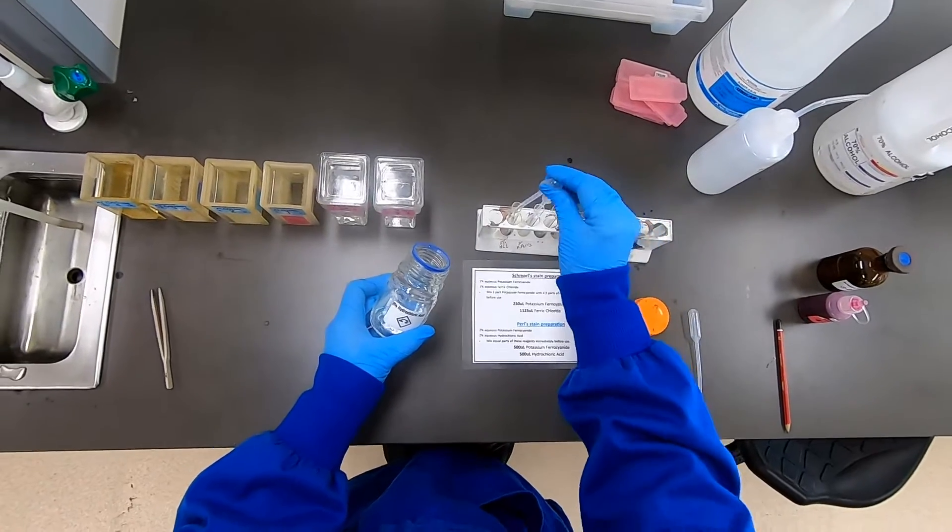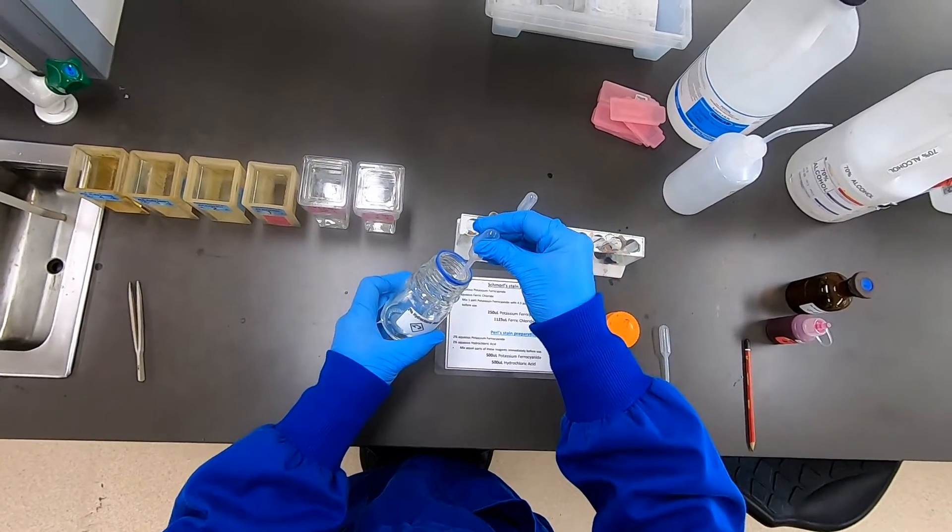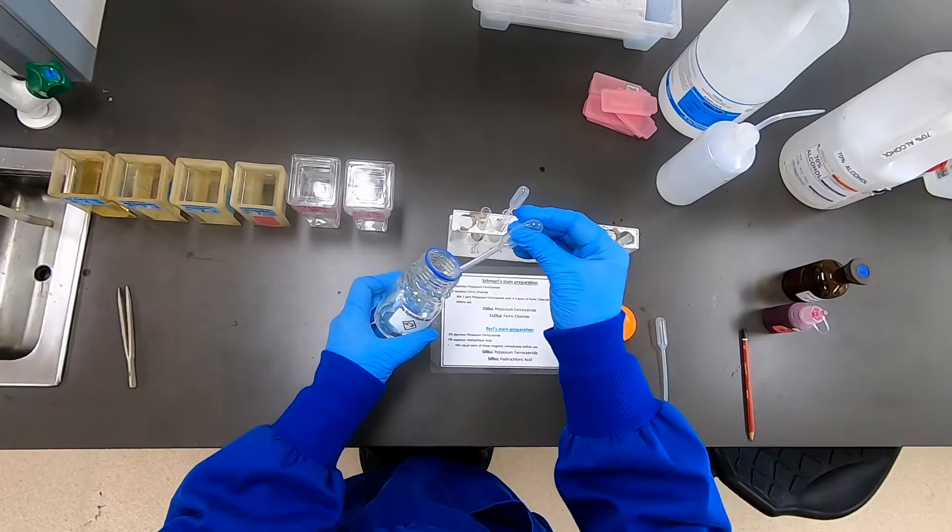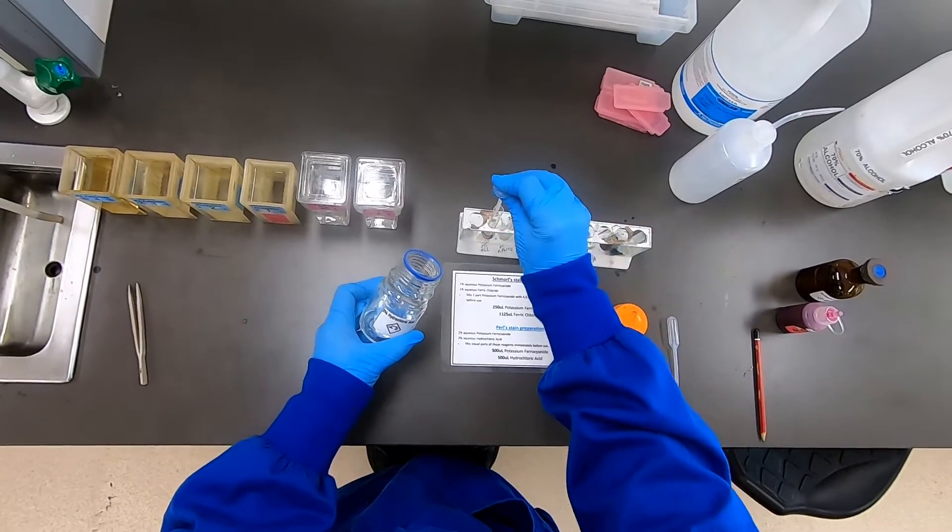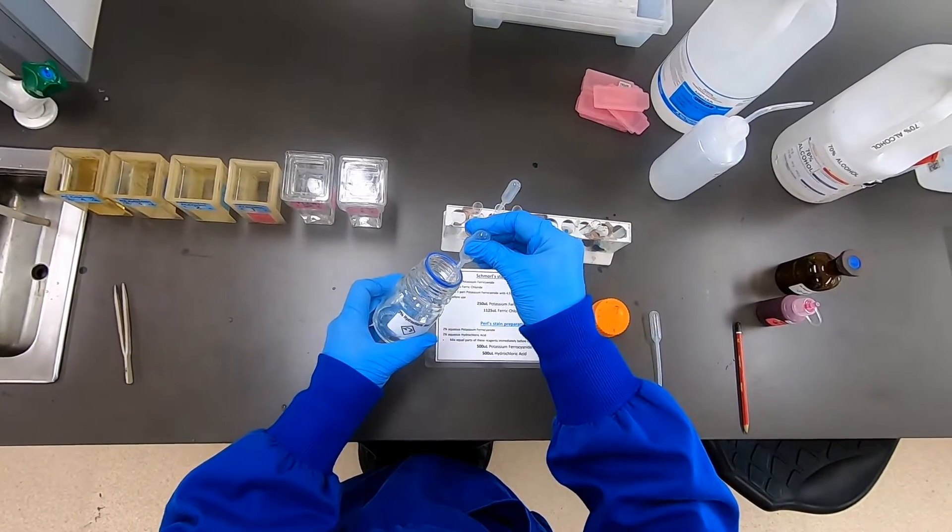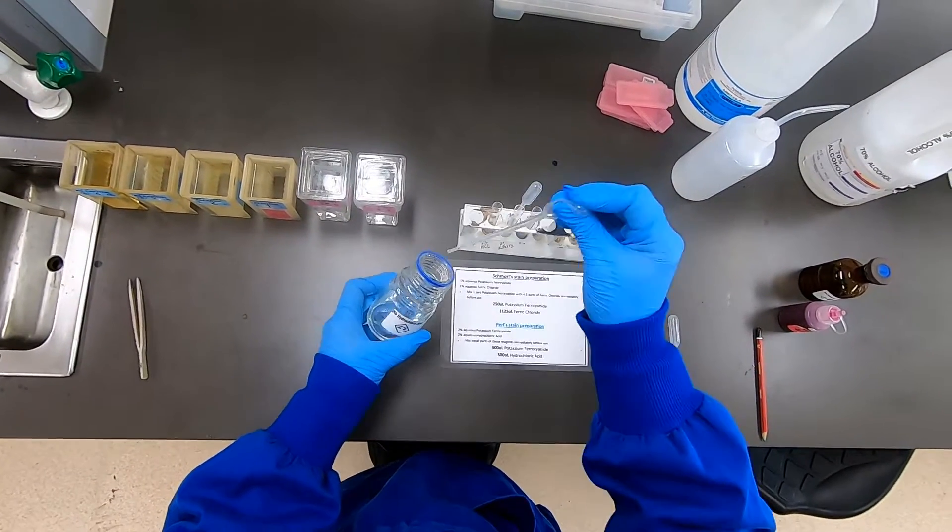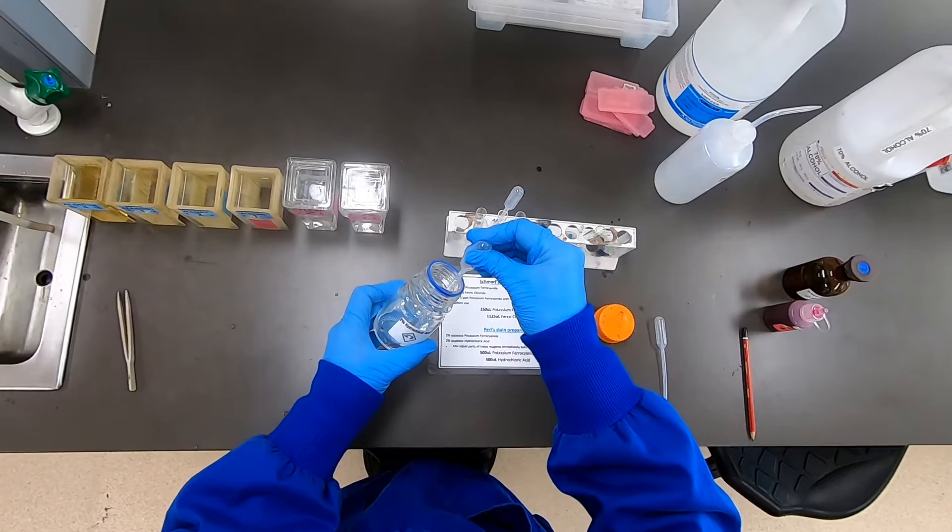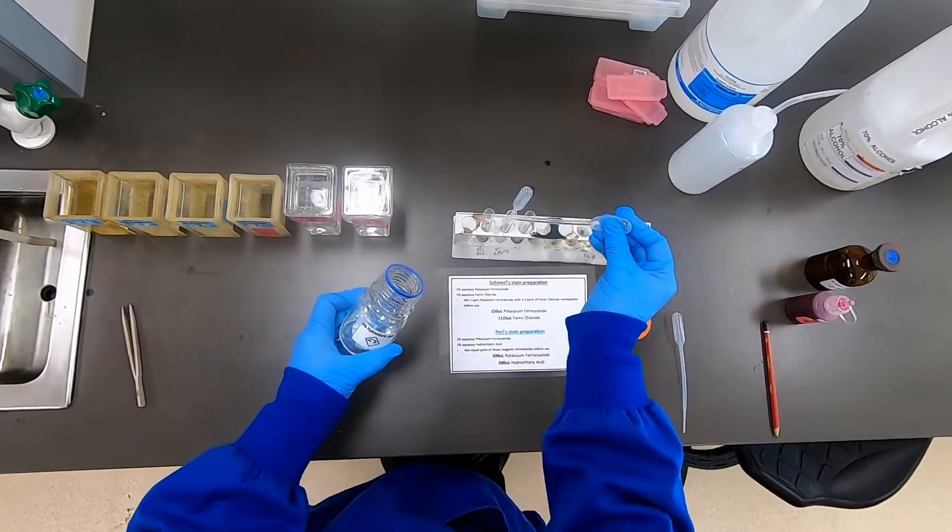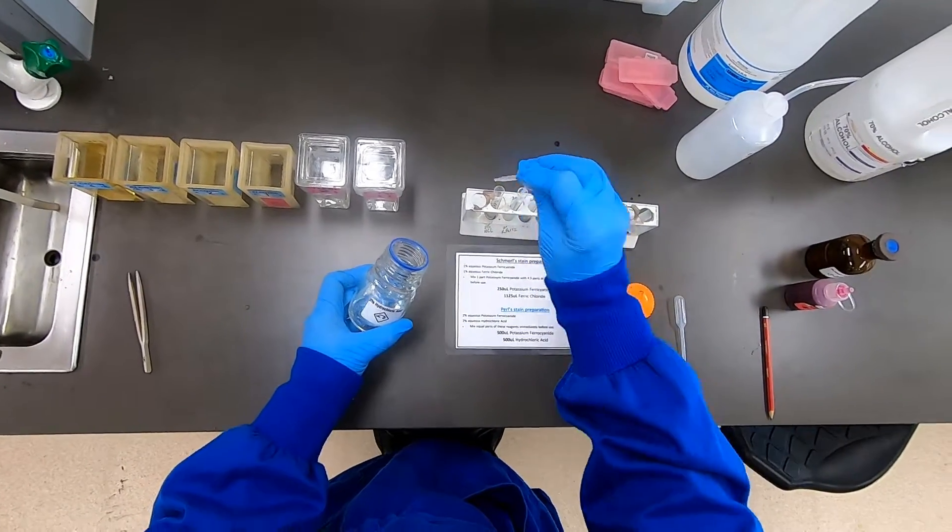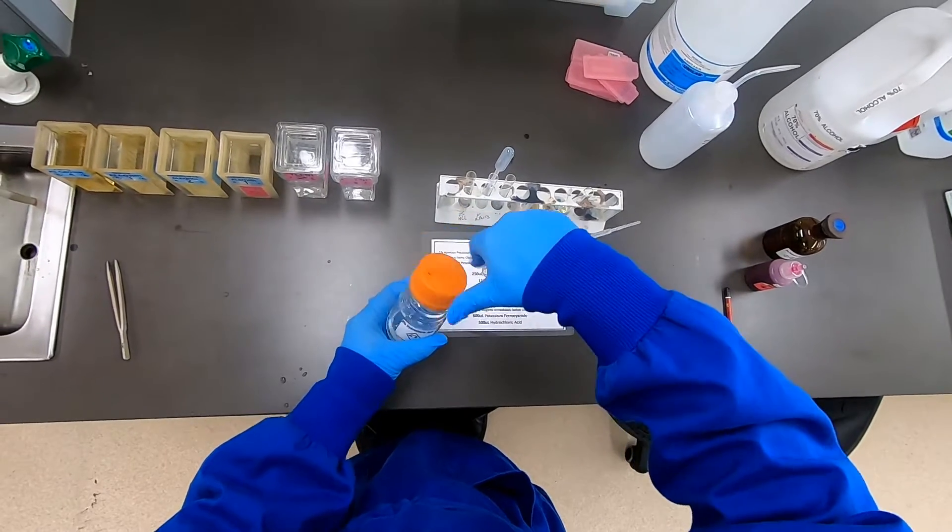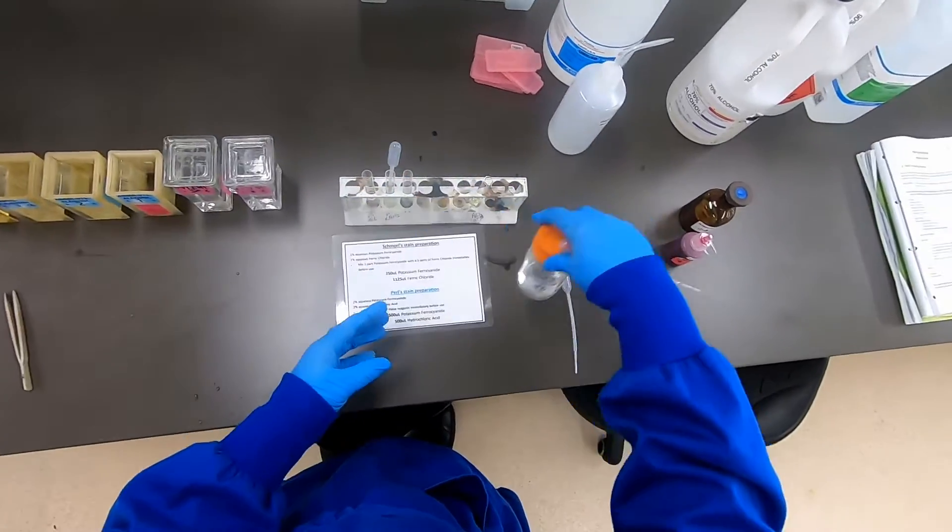On this occasion I have around 8 slides to be stained, so we'll measure out approximately 4 mL of the hydrochloric acid, then combine that with an equal volume of the potassium ferrocyanide.